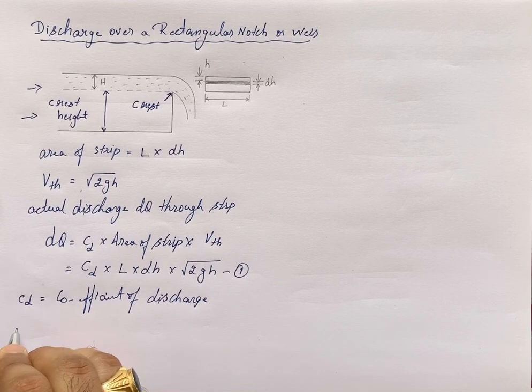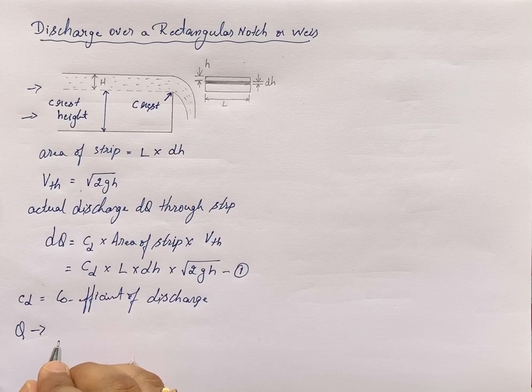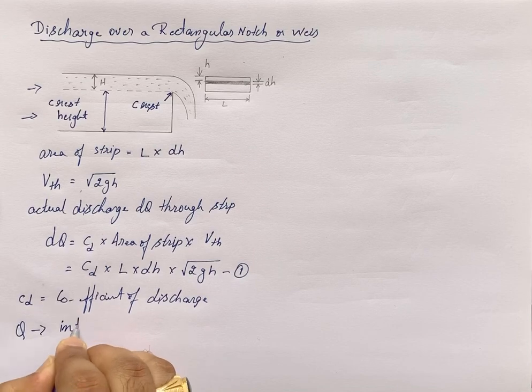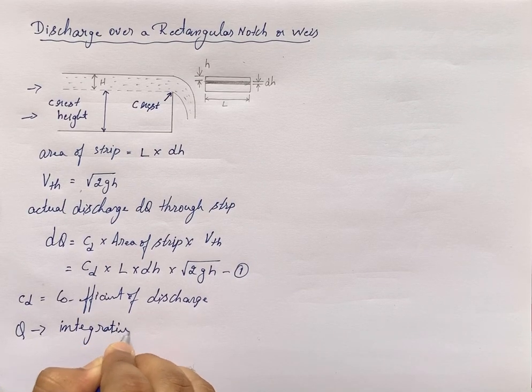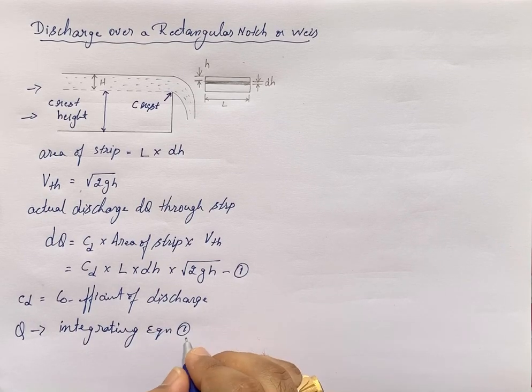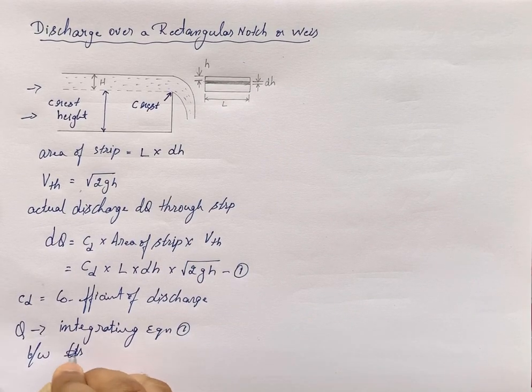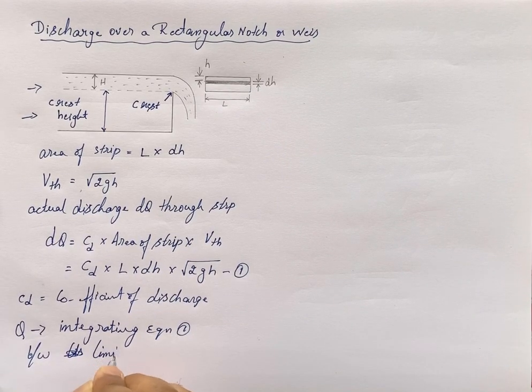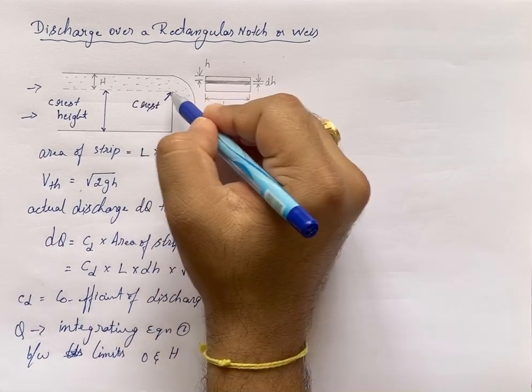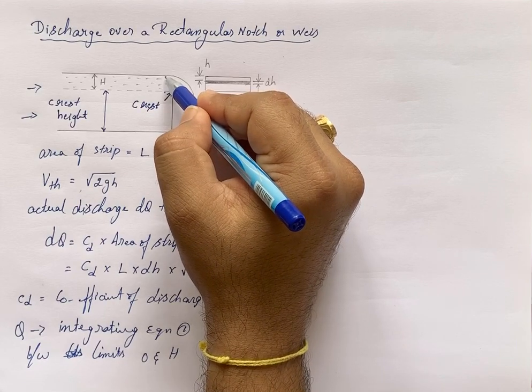Now how to find the total discharge Q? To find the total discharge Q for the whole notch or weir, it is done by integrating equation 1 between the limits 0 and H. Between these limits, from the 0 point to the height H point.